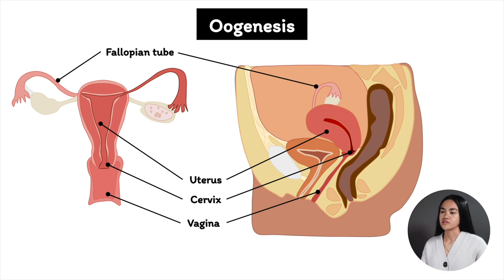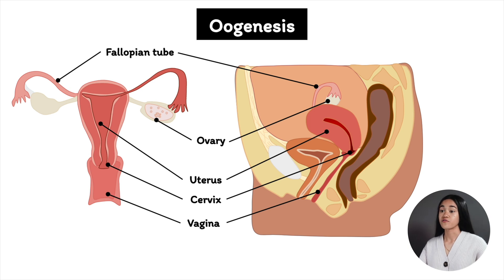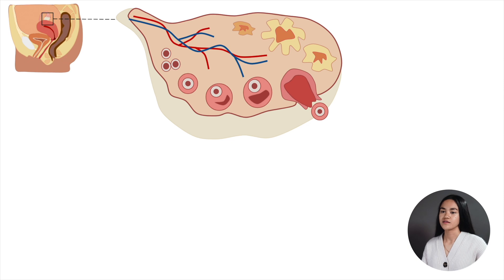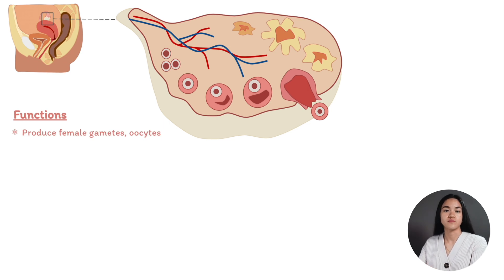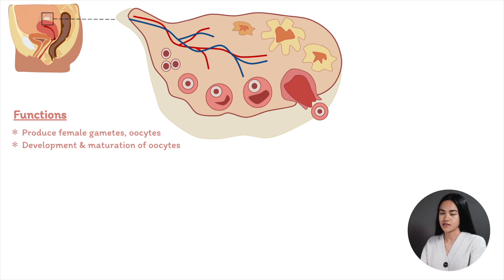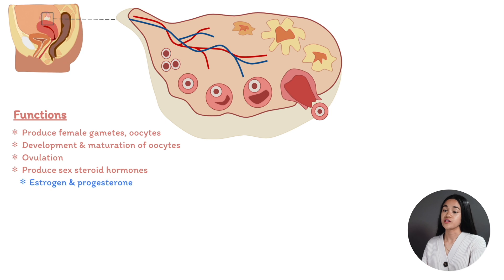Then we have the fallopian tubes, paired muscular tubes near the ovaries, and of course the ovaries, the female gonads. In this lecture we're focusing on the ovaries and the production of oocytes. The ovary has several functions: oogenesis, the formation and maturation of oocytes; ovulation, the release of mature oocytes; and the synthesis and secretion of estrogen, progesterone, and the protein hormone inhibin.